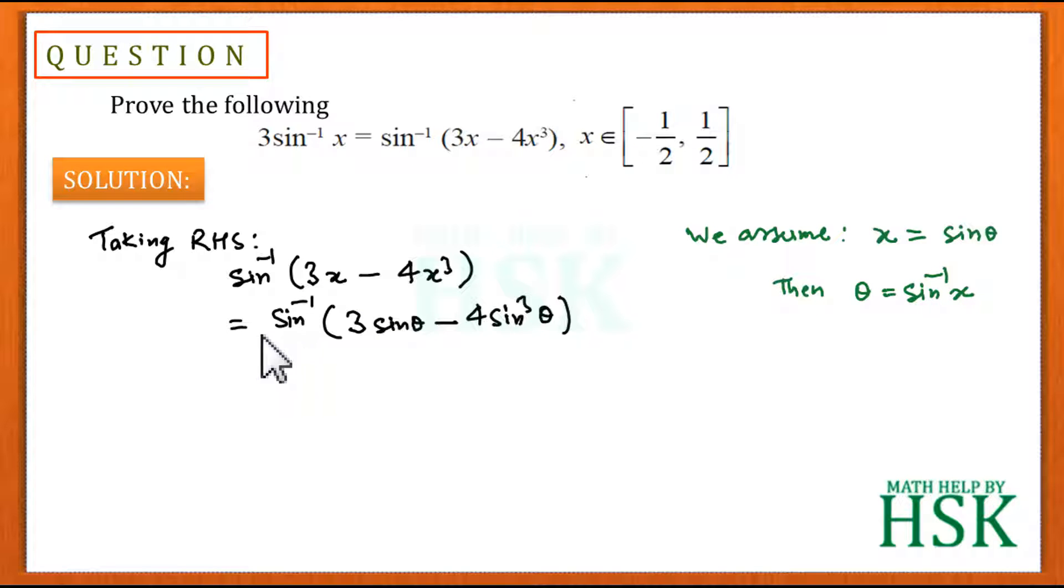x = sin θ, I get this value as equal to sin⁻¹(3sin θ - 4sin³θ).